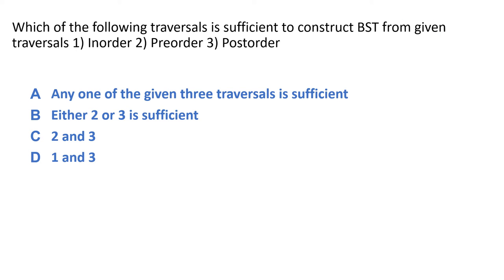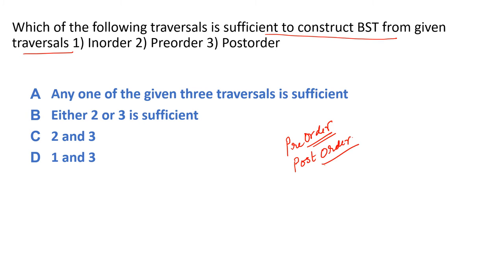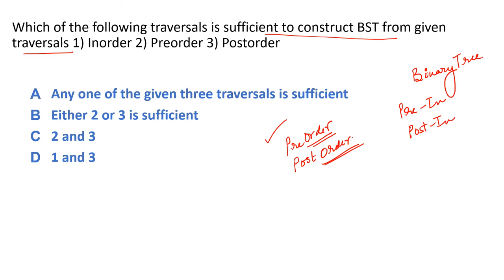Next question: which of the following traversals is sufficient to construct a BST from the traversal? Abhi humne previous question mein dekha ki pre-order traversal se hum ek tree bana sakte hain. Isi tarah se post-order traversal se bhi ek tree bana sakte hain, lekin in-order se nahi bana sakte. Binary tree mein mujhe 2 traversals chahiye — ya toh pre-order + in-order ka combination, ya post-order + in-order ka combination. Lekin BST mein hum pre-order se bhi bana sakte hain, aur post-order se bhi.